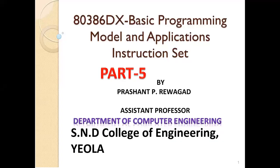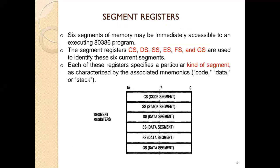Hello friends, today we are discussing the basic programming model and application instruction set, Part 5. Six segments of memory can be immediately accessible to an execution of the 80386 program. The segment registers DS, CS, SS — that is the code segment, data segment, stack segment, extra segment — FS and GS are used to identify these six current segments.